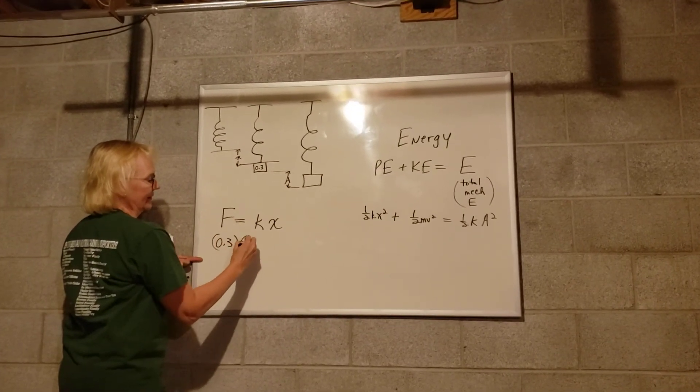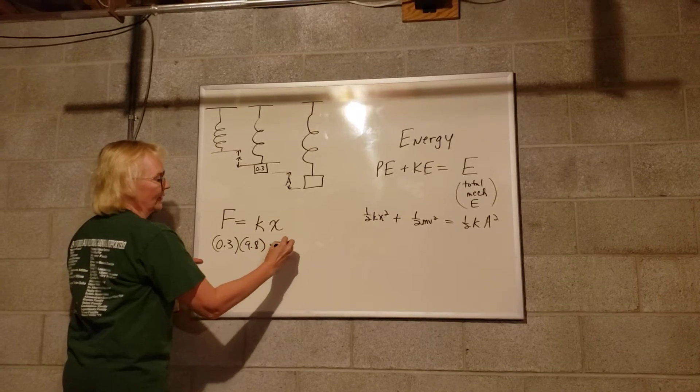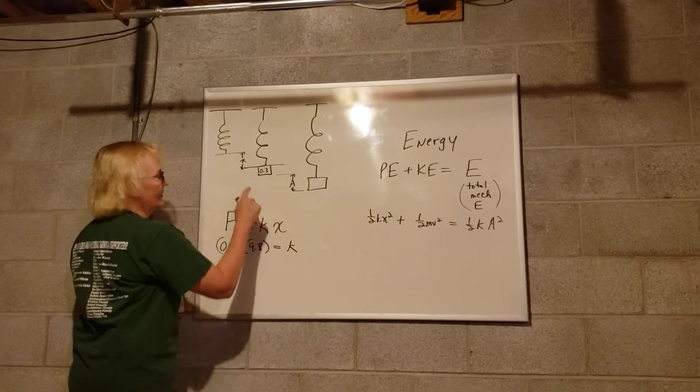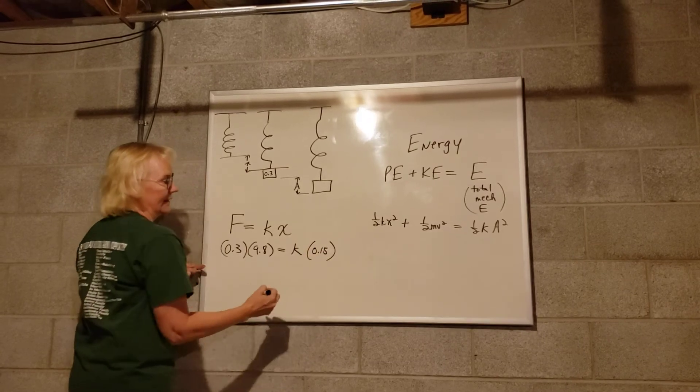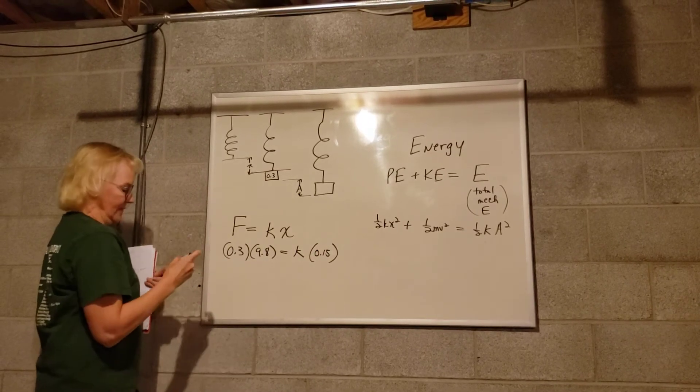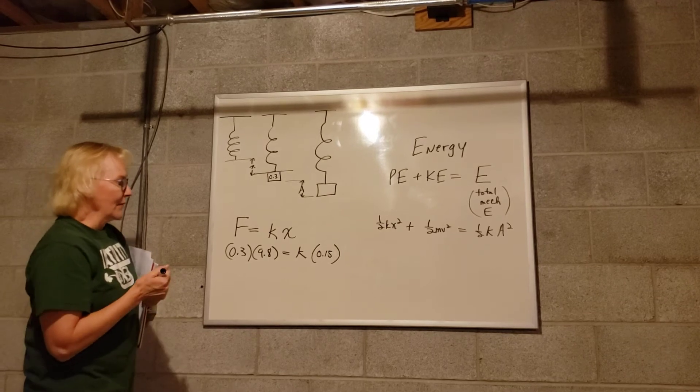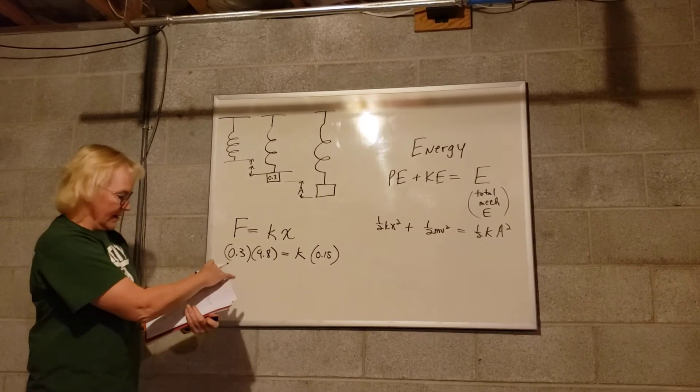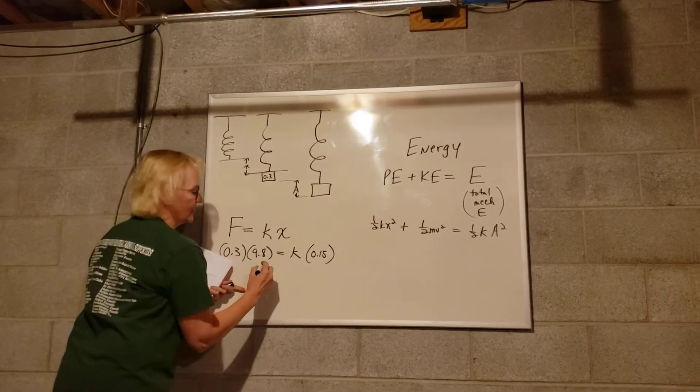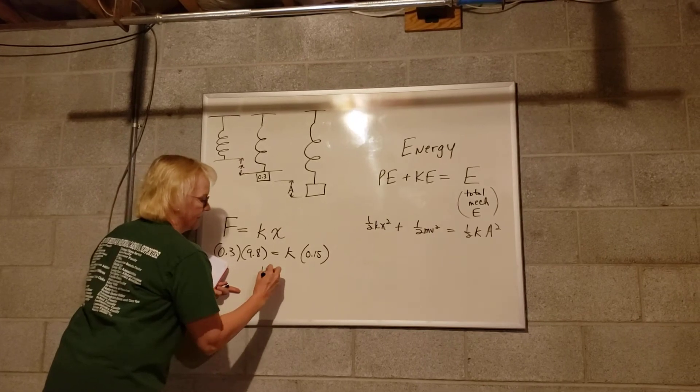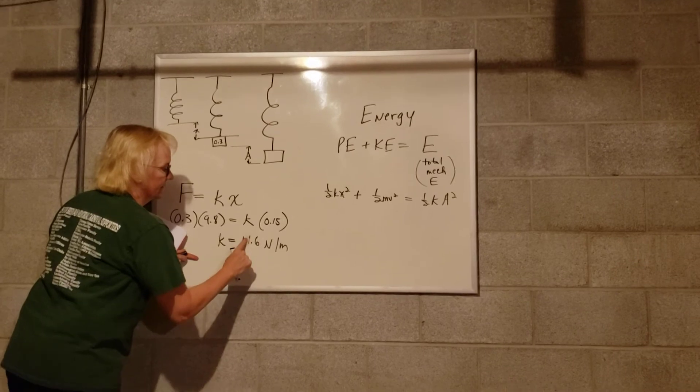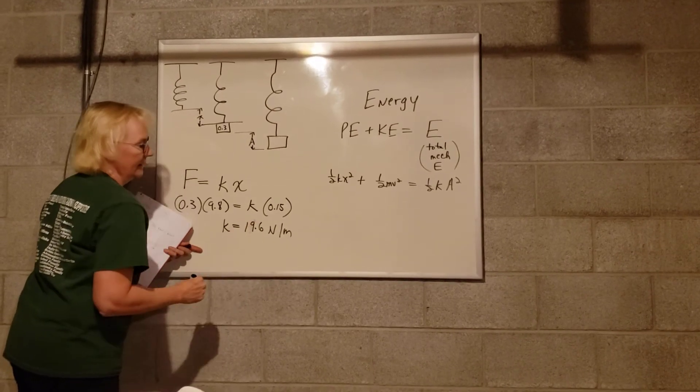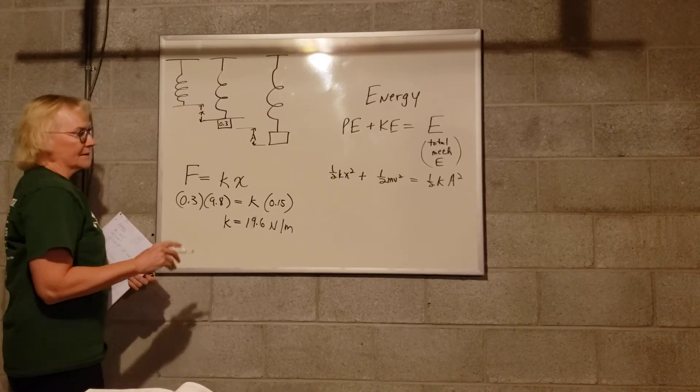We don't know K, that's what we're solving for, but we know that it stretched 0.15 meters when that weight was attached to it. Okay, so we divide each side by 0.15, and the spring constant is 19.6 newtons per meter, and you'll need that later on.